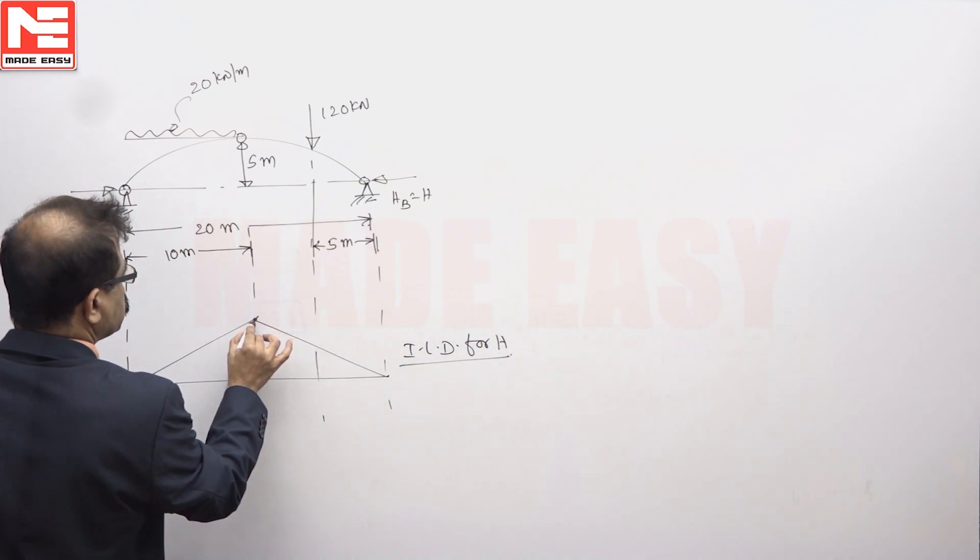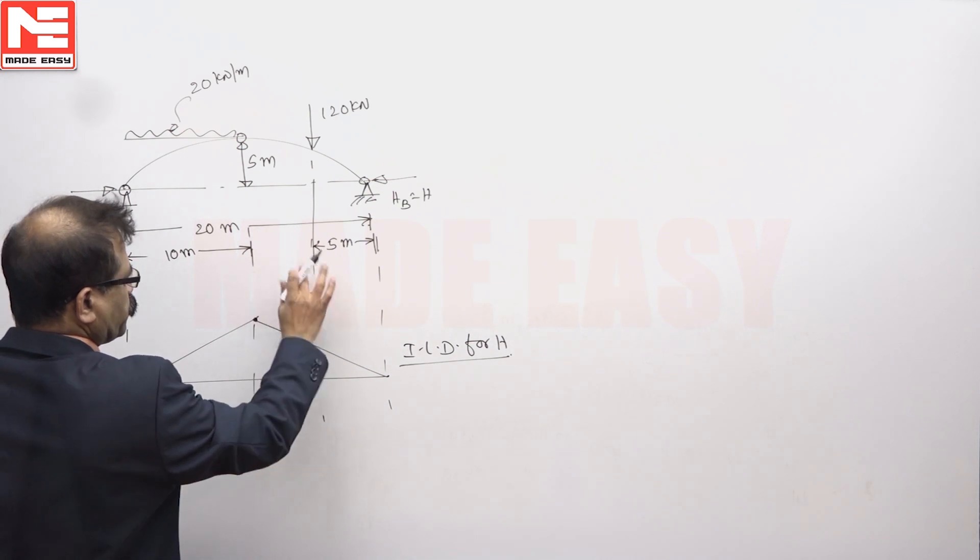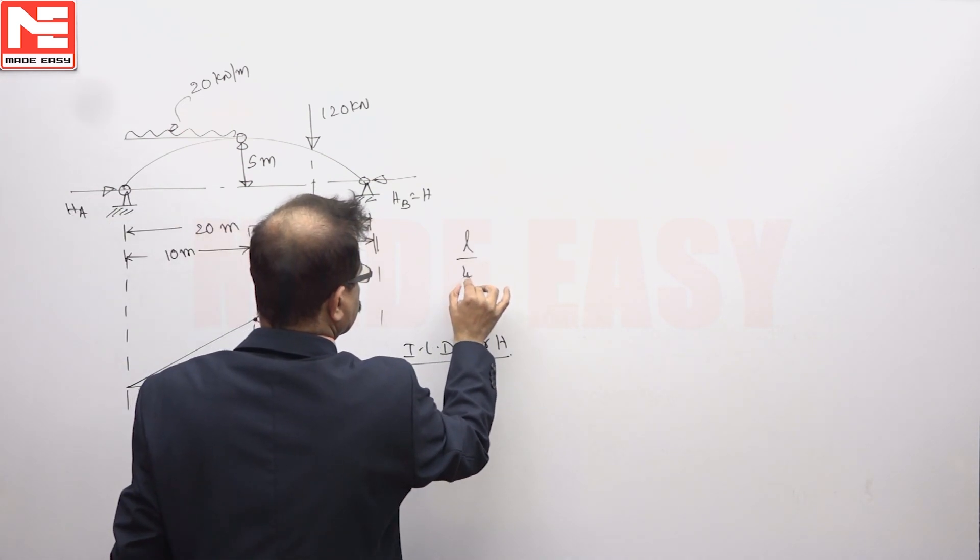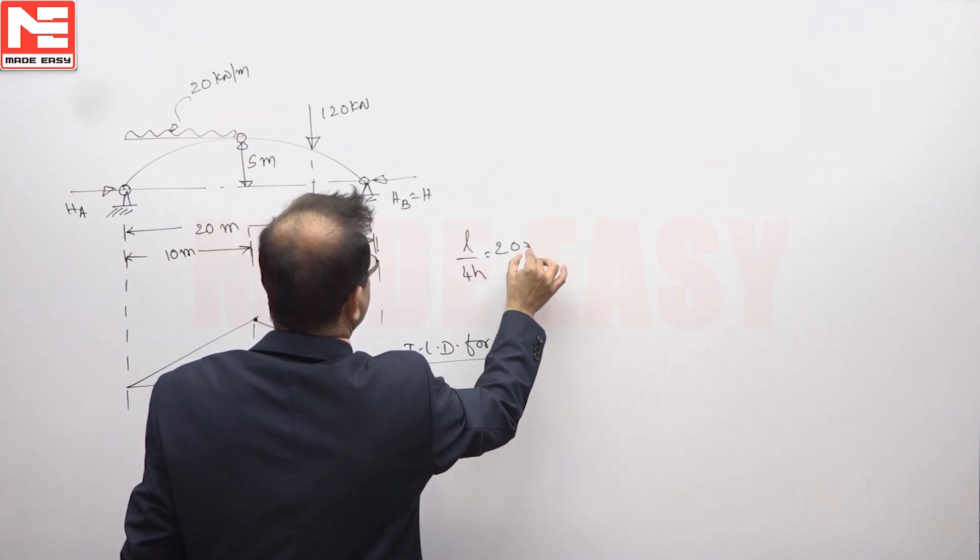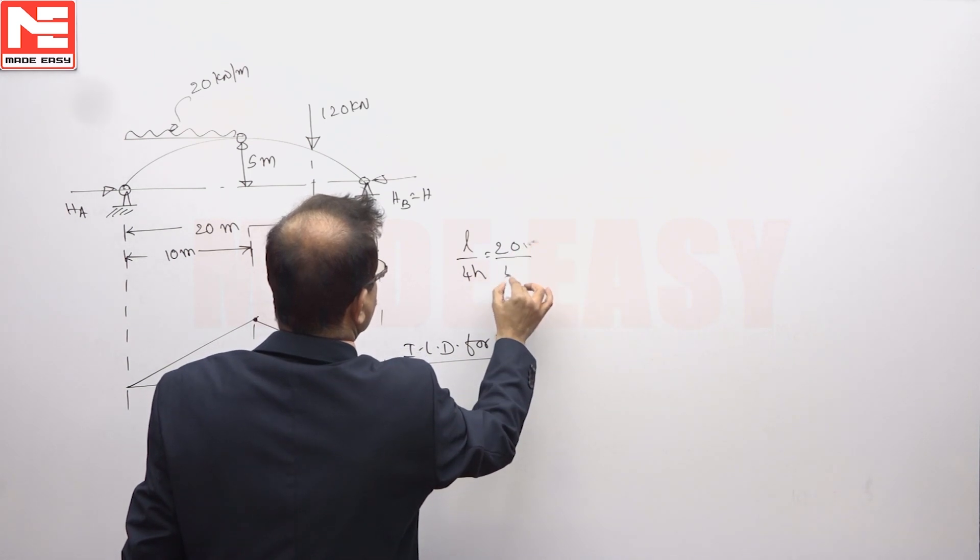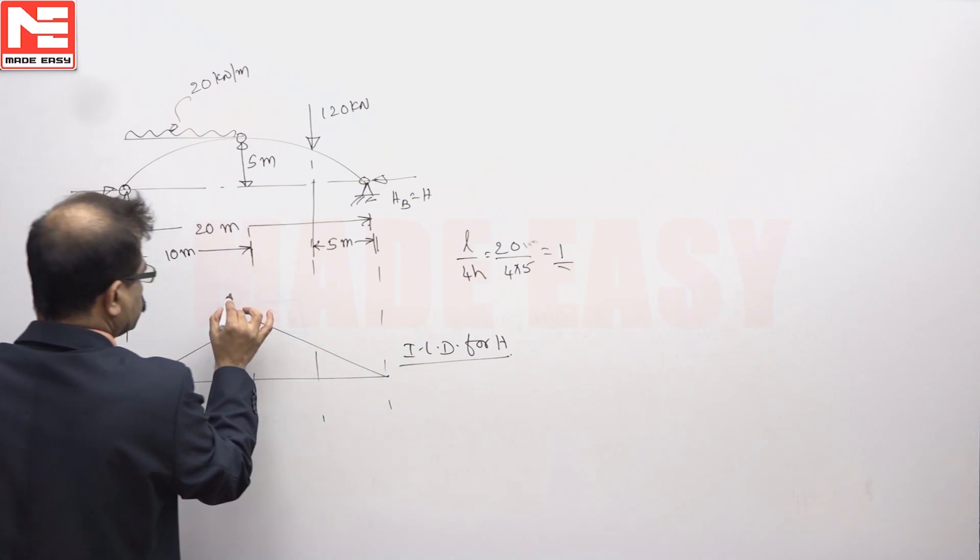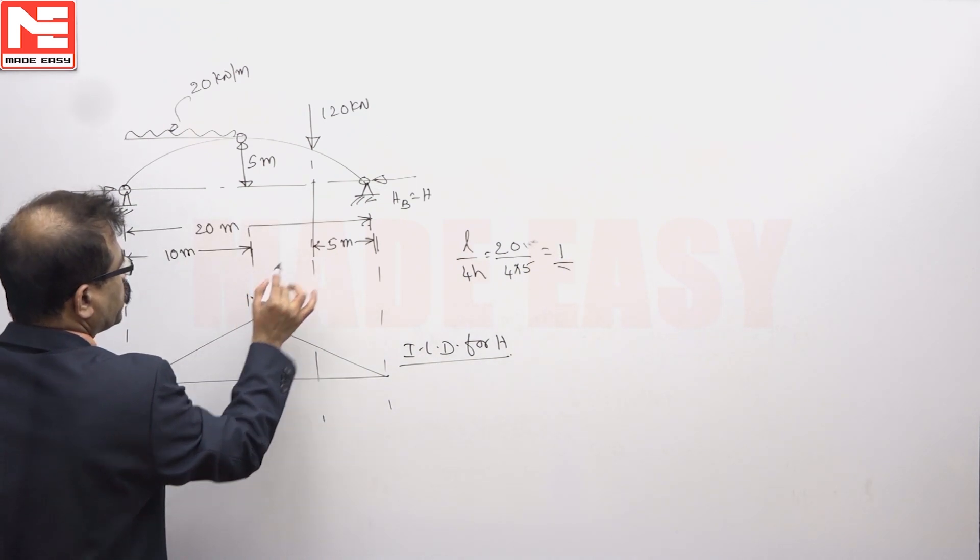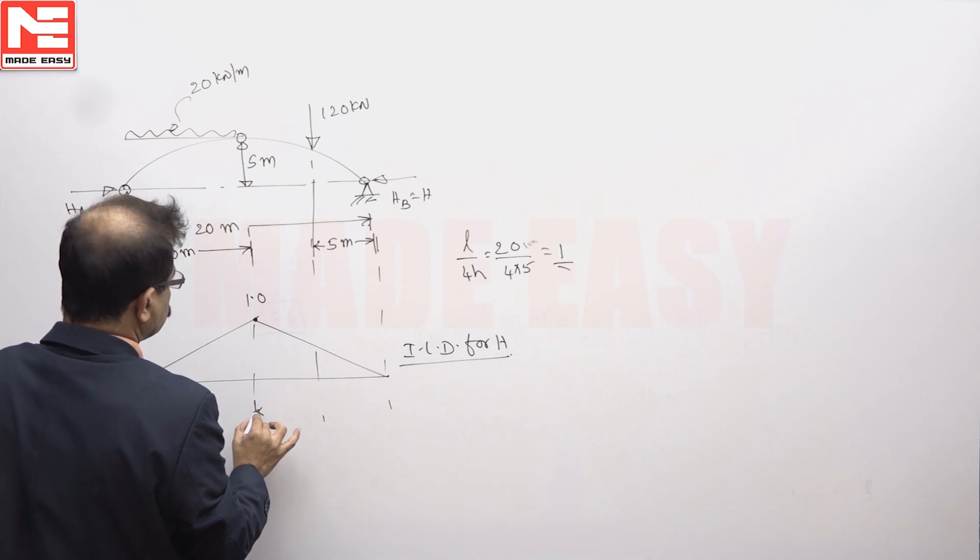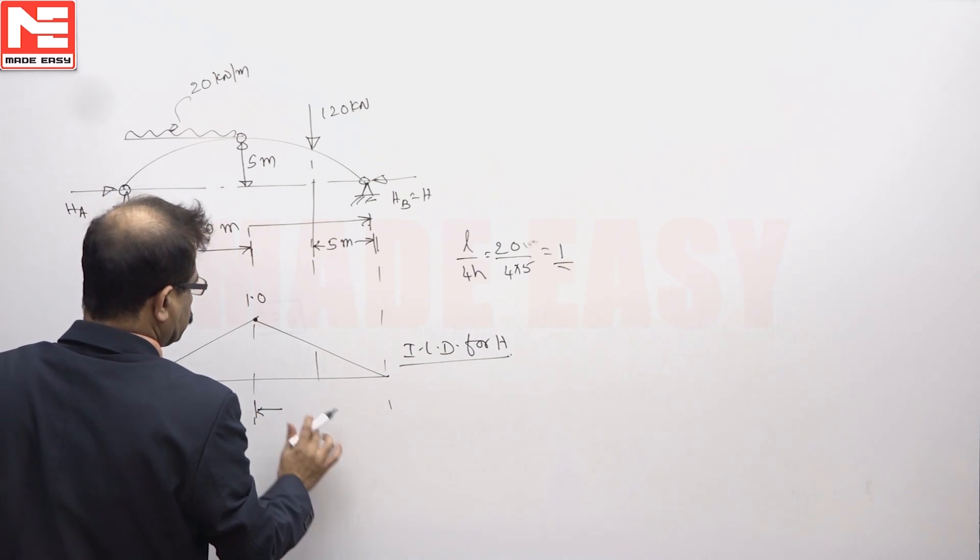This ordinate is L by 4H, 20 meters by 4 into H is 5, you will get 1. This ordinate is 1, this is for 10 meters.